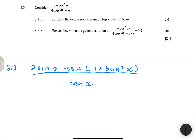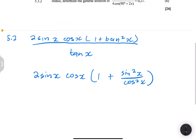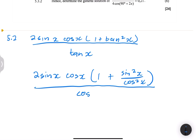So we have 2sin(x)·cos(x)·(1 + tan²x) all divided by tan(x). I see tan²x in the bracket, so I'll replace it with sin²x over cos²x. And tan(x) in the denominator becomes sin(x) divided by cos(x).